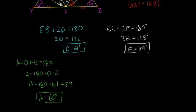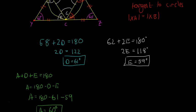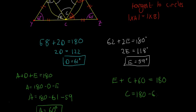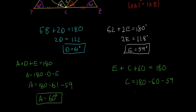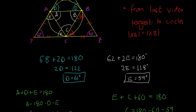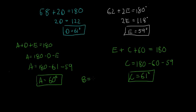For the bottom angle C: E plus C plus 60 equals 180, so C equals 180 minus 60 minus 59, which gives C equals 61 degrees. And doing the same for B, we get that B equals 59 degrees. So the internal angles A, B, and C are 60 degrees, 59 degrees, and 61 degrees.